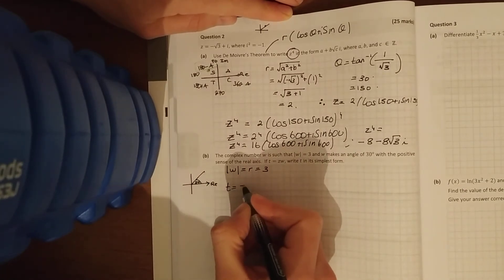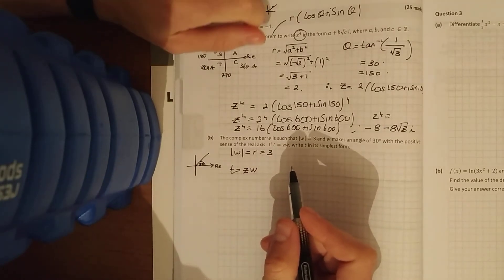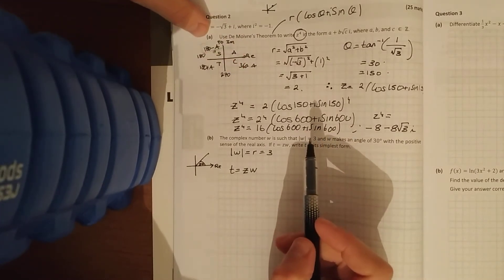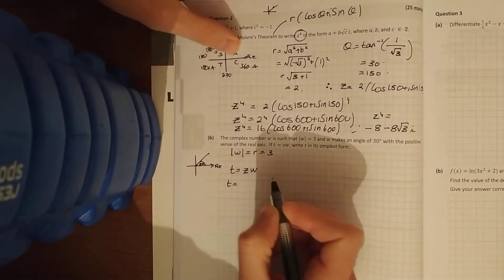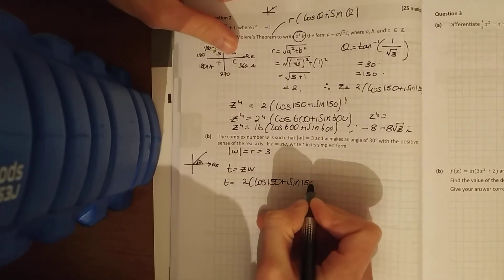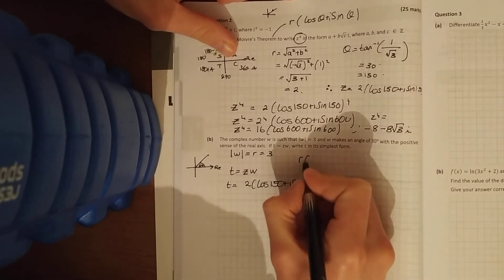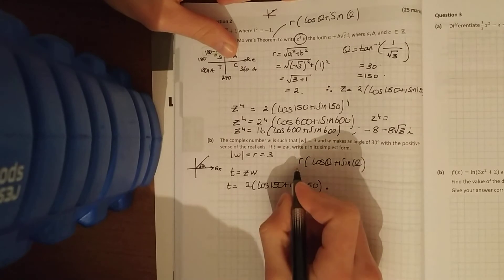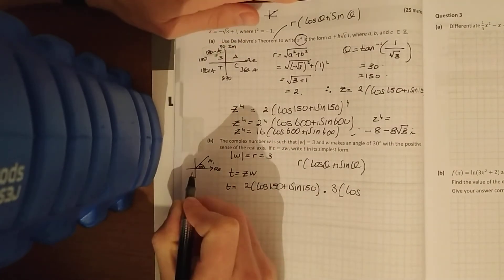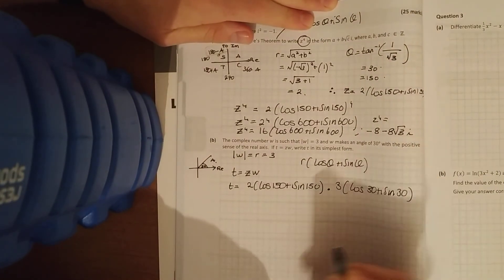So t equals z over w. You can write your z as what they said at the top, minus root 3 plus i, or you could say t is equal to z, which you filled in up there, to be 2 cos 150 plus i sine 150, times w. And then w, to give you all the information to fill that in, remember for De Moivre, r cos theta plus i sine theta, so r, your modulus, is 3, and since we're in the positive sense of the real axis, we're in that alpha section of CAST, and we don't need to take it away or anything like that, so it's 3 cos 30 plus i sine 30. So I'm going to deal with it in polar form.